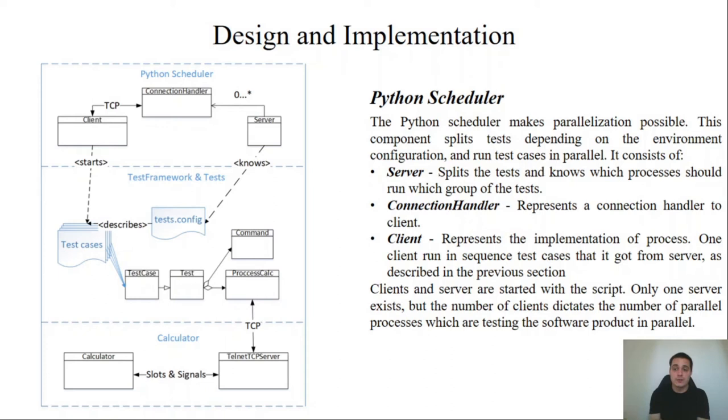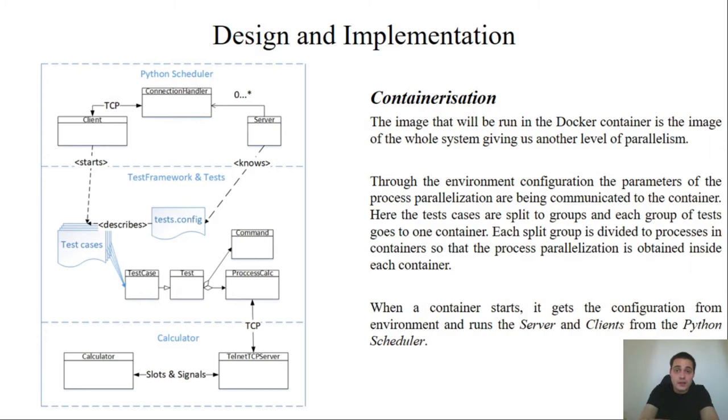Clients and servers are started with a script. Only one server exists but the number of clients dictates the number of parallel processes which are testing the software product in parallel. In the end we have a containerization of our system. The image that will be run in Docker container is the image of the whole system, giving us another level of parallelization. Throughout the environment configuration the parameters of the process parallelization are being communicated to the container. Which means that when we start the container we firstly communicate the environment configuration to it. Every container knows which group of tests it can run and knows how many clients in it should be run. When a container starts it gets the configuration and starts the server and clients from the Python scheduler.